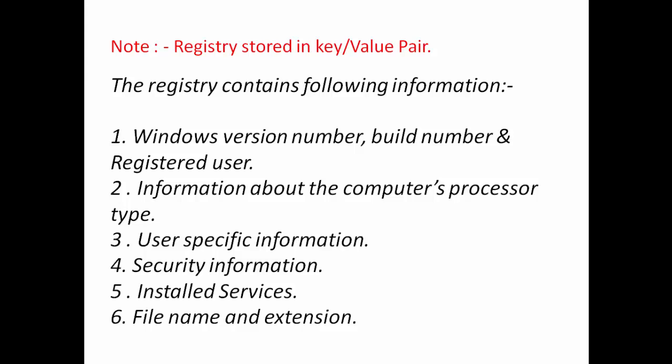The registry contains the following information: first, the version number, build number, and registered user; second, information about the computer's processor types such as i3, i5, and so on; third, user-specific information and account-related information stored in security information; and also installed services, filename, and extension.